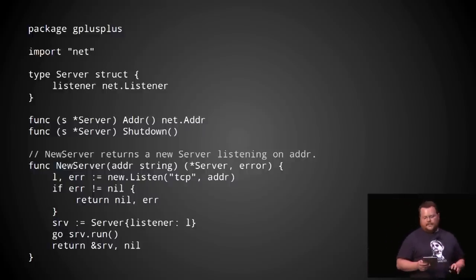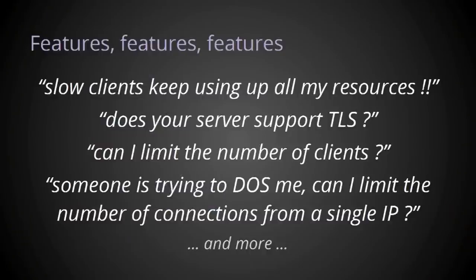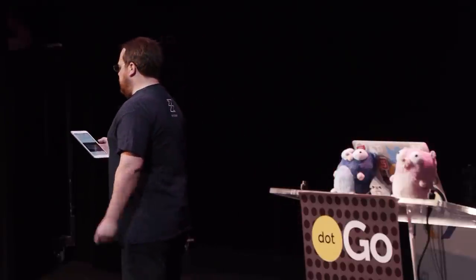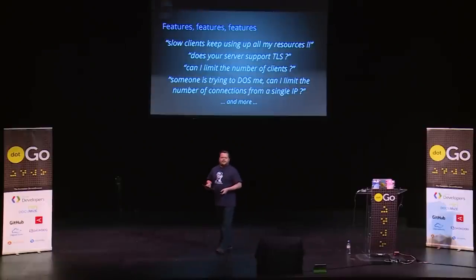Soon after you announce your first beta, the feature requests start to roll in. Mobile clients are often slow to respond, or they don't respond altogether, and you need to add support for disconnecting these slow clients. In this climate of heightened security awareness, your bug tracker starts to fill up with people complaining about your lack of support for TLS. Then you get a report from a user running your server on a very small VPS — they can't manage the number of connections and need a way to limit simultaneous connections. Next is the request to rate-limit concurrent connections from a group of users being attacked by a botnet. And on it goes.